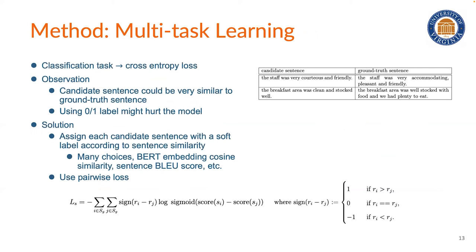Since the task is basically a classification task, which means that we can set the ground-truth sentence with label 1 and the other sentence with label 0, we can first use general classification loss such as cross-entropy loss. However, based on our observation, we found that candidate sentences could be very similar to ground-truth sentences.